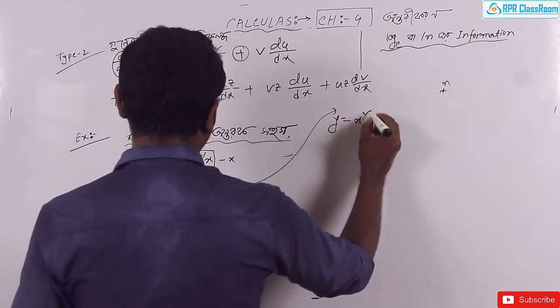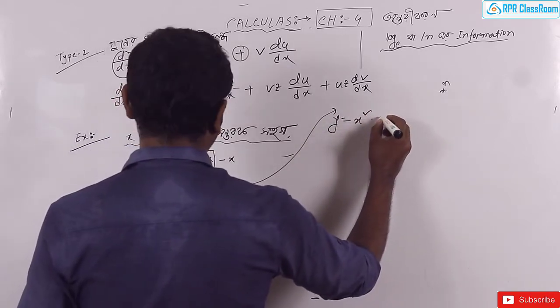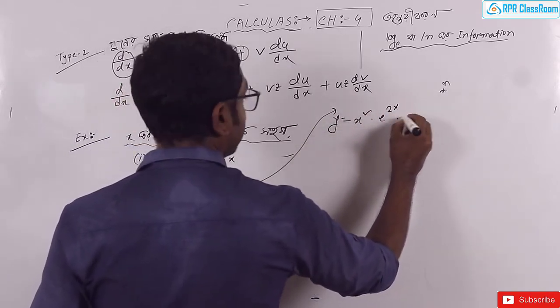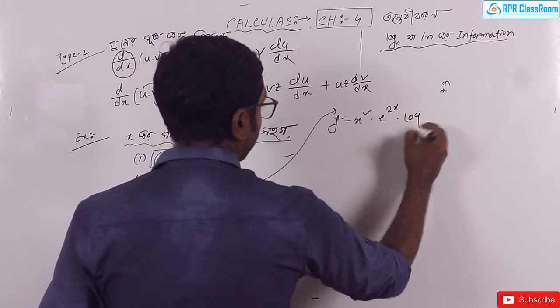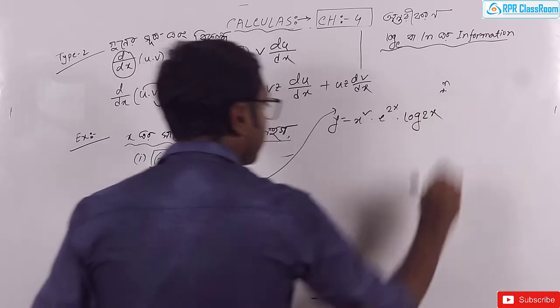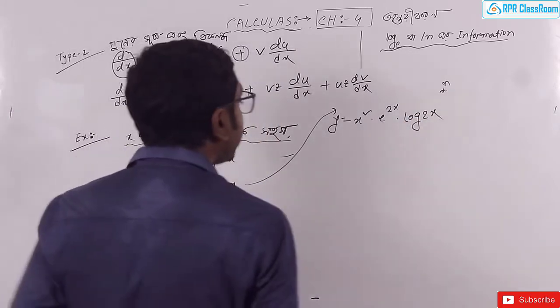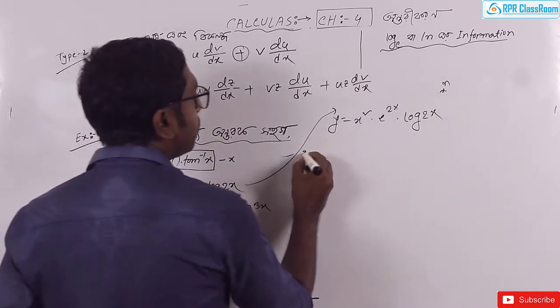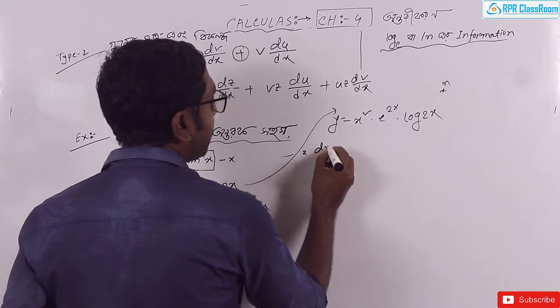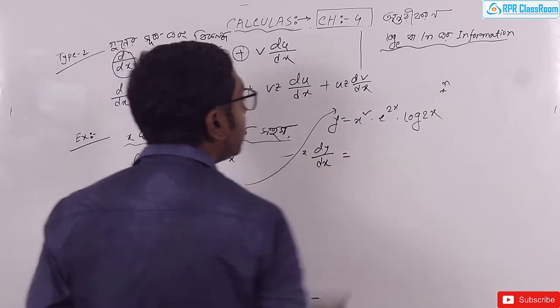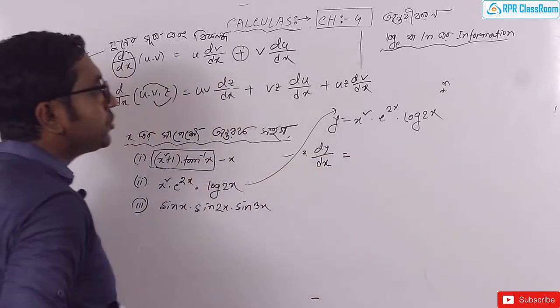x is square, it is square and it is square away by 2x. If I say dy by dx I will do this.